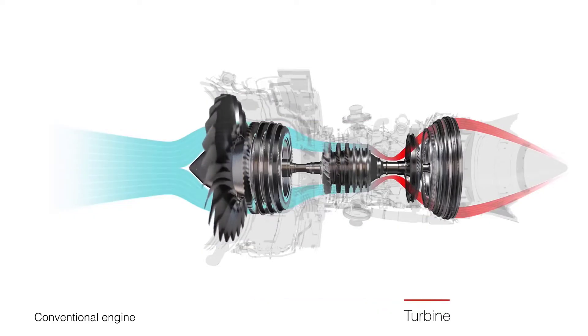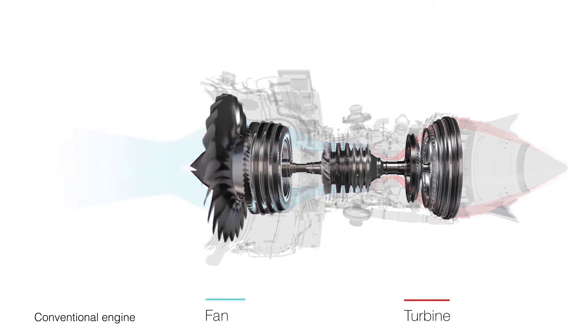which in turn drives the fan. In a conventional engine, the fan and turbine rotate at the same speed, on the same shaft, which really limits the efficiency of both components.